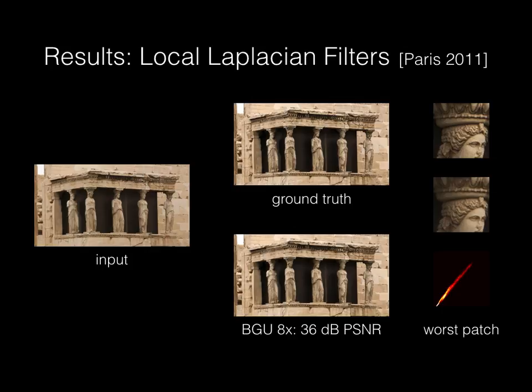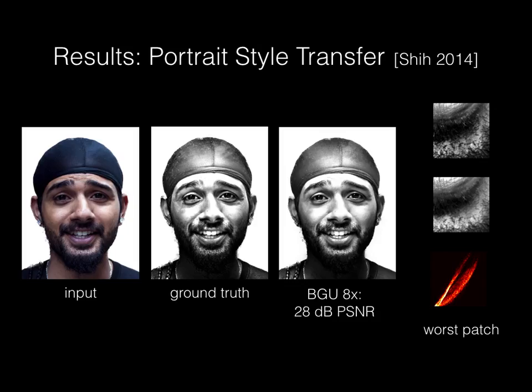On the right, you can see the spatial patch where our result differs the most from ground truth, and on the bottom right, the input-output curve for that patch. What we lose from our approximation is basically a bit of contrast. This is another result on a recent specialized algorithm to transfer the style of portrait photos. Even though we achieved only a PSNR of 28 dB, it is hard to notice the differences until you zoom in.